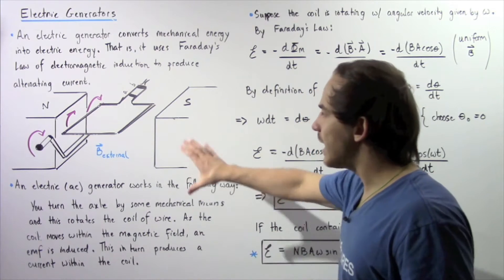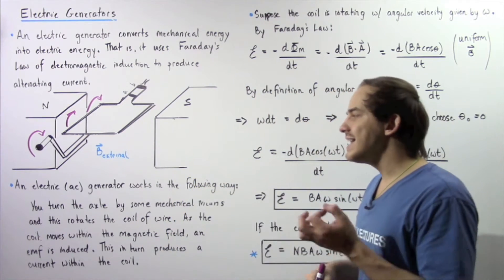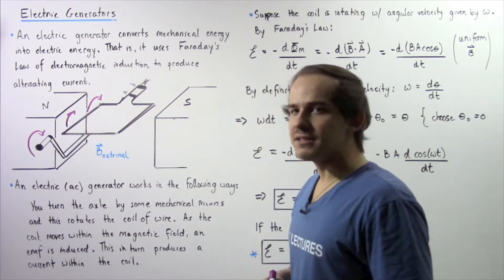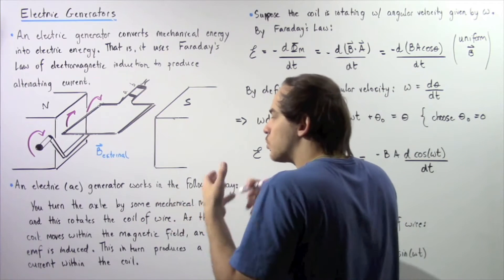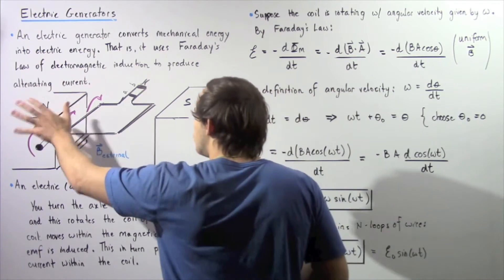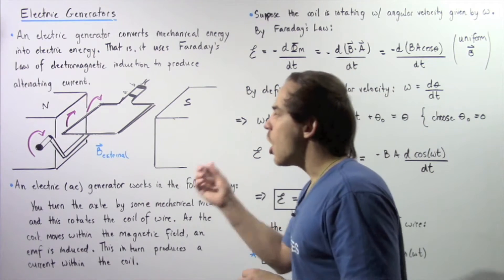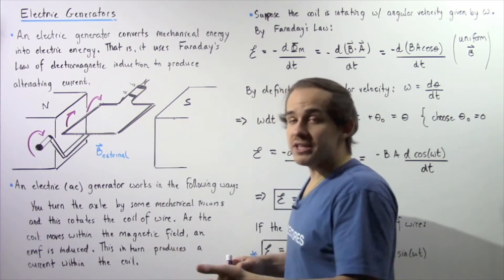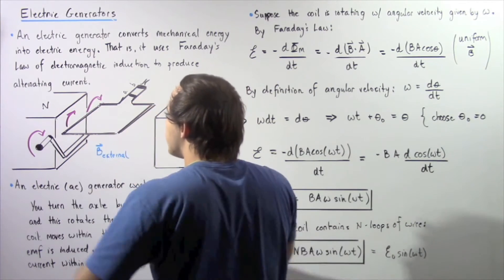Let's look at the following general diagram of an electric generator, also known as an AC generator. Here we have two different poles of a magnet — a North Pole and a South Pole. These magnets produce an external magnetic field B_external that begins at the North Pole and points towards the South Pole. We also have an axle, essentially a lever arm, connected to a coil of wire.